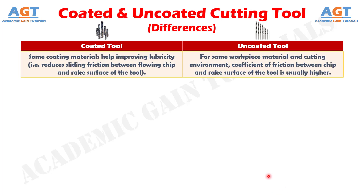Number 7. In case of a coated tool, some coating materials help improving lubricity — that is, it reduces sliding friction between the flowing chip and the rake surface of the tool — whereas for the same workpiece material and cutting environment, the coefficient of friction between chip and rake surface of the tool is usually higher for an uncoated tool.